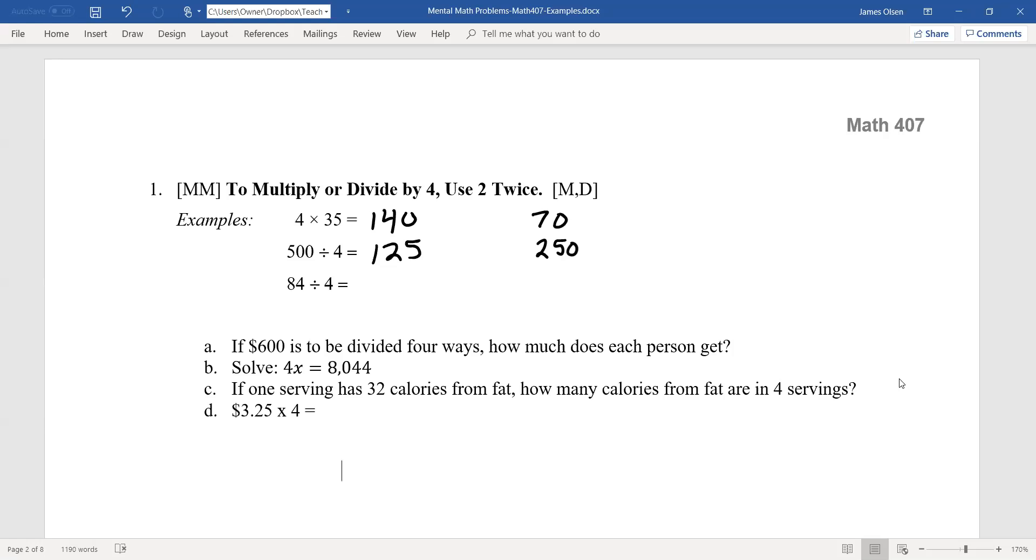84 divided by four. Half of 84 is 42, and half of 42 is 21. Thank you.